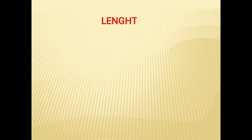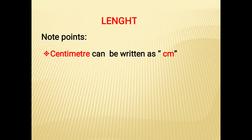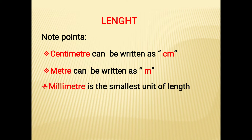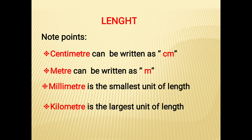Dear students, today we are going to learn about the conversion of meter and centimeter. Before that, look at the note points. First point: centimeter can be written as cm, so the short form of centimeter is cm. Meter can be written as m, so the short form of meter is m. Millimeter is the smallest unit of length and kilometer is the largest unit of length.